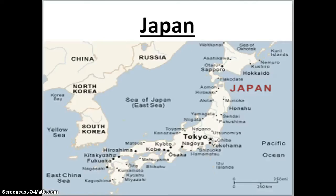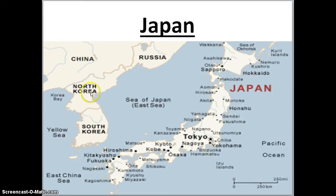Here is Japan. Japan is an island, and it's off the coast of China and the Koreas — both north and south. Here is Japan on the map.